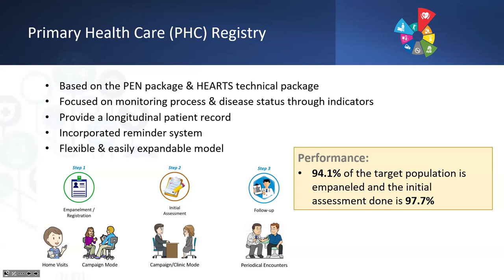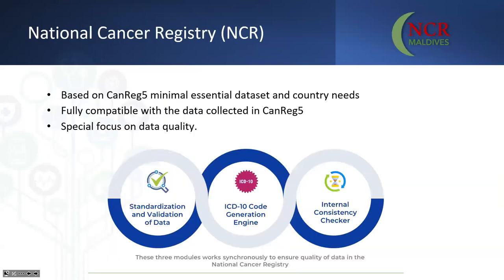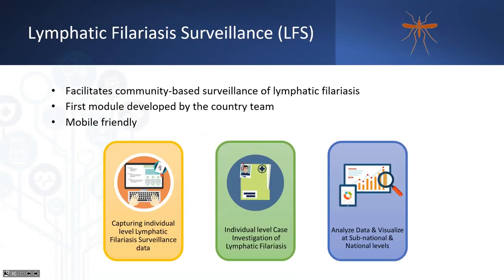In Faafu Atoll, where we piloted last year, we are now doing follow-ups using the tracker system. The National Cancer Registry is a hospital-based registry where cancer patients' disease type, treatment, and diagnosis status are entered. Through integration with the Primary Health Care Registry, a healthcare worker can see a cancer patient's risk behaviors — for example, whether a patient with lung cancer is a smoker — if they are enrolled in the PHC registry. The Lymphatic Filariasis Surveillance module is currently used at central level for screening locals.